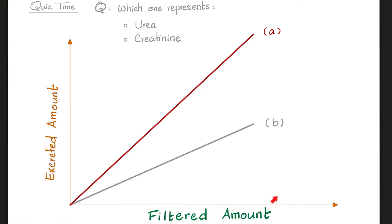Quiz time! Here is a graph for you with two straight lines, A and B. Which one represents urea, and which one represents creatinine? Can you tell me the answer in the comment section? You'll find the answer key in the next video, blood urea nitrogen.